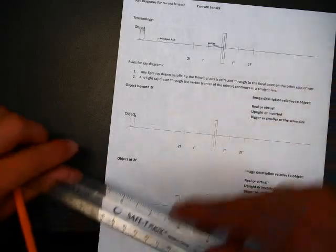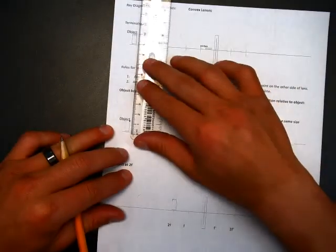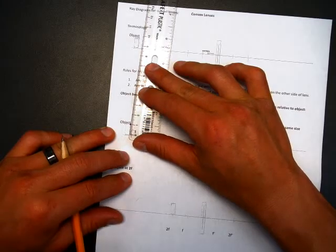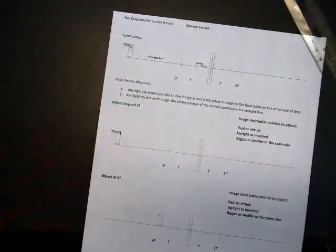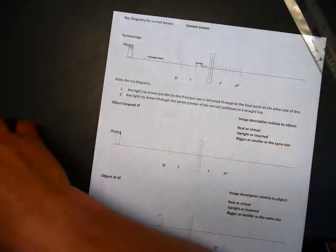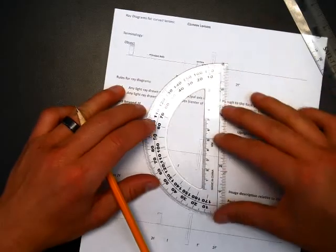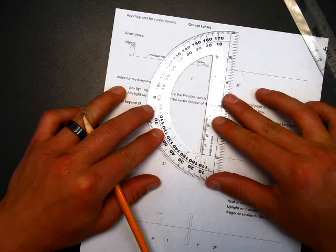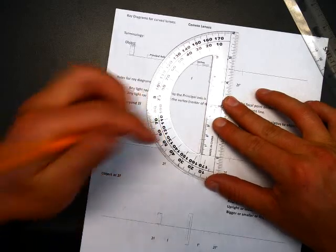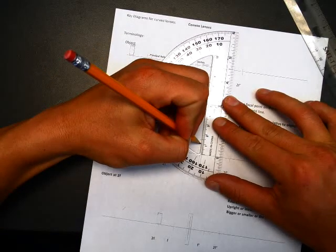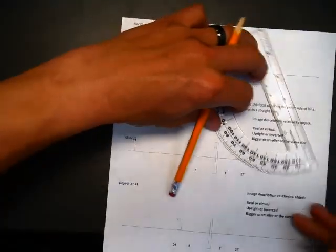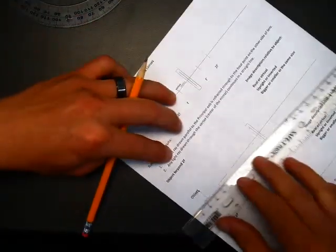Now I'm going to measure how tall that is - that's a centimeter. Why am I measuring that? It's roughly a centimeter tall. I like using the protractor better. I'm going to make a mark of a centimeter right here. What that's going to do is make sure it's perfectly parallel to the principal axis.